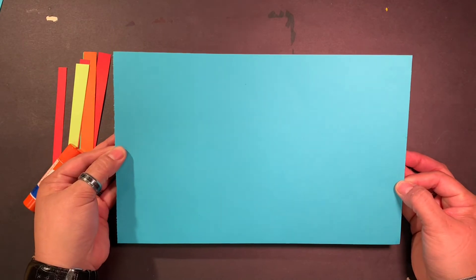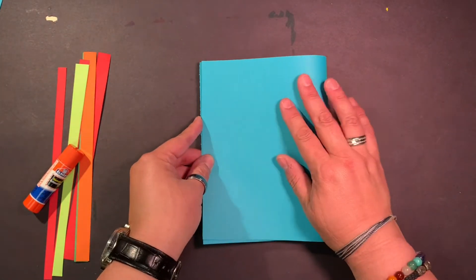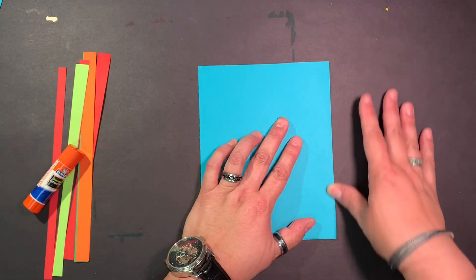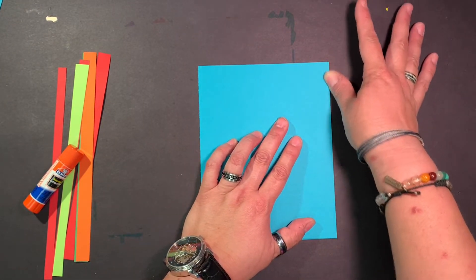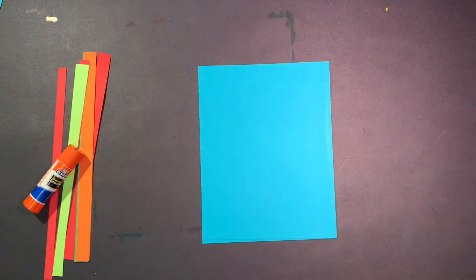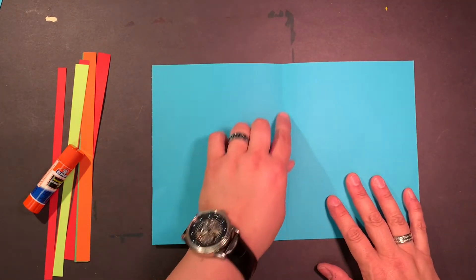So you're going to take the two short sides of our rectangle and put them together like this. And then we're going to lay it down and we're going to slide our finger up and down and crease the side. Now this is a helper crease. So once we've got that like that we're going to open it up and you can see there's an invisible fold line in the middle.